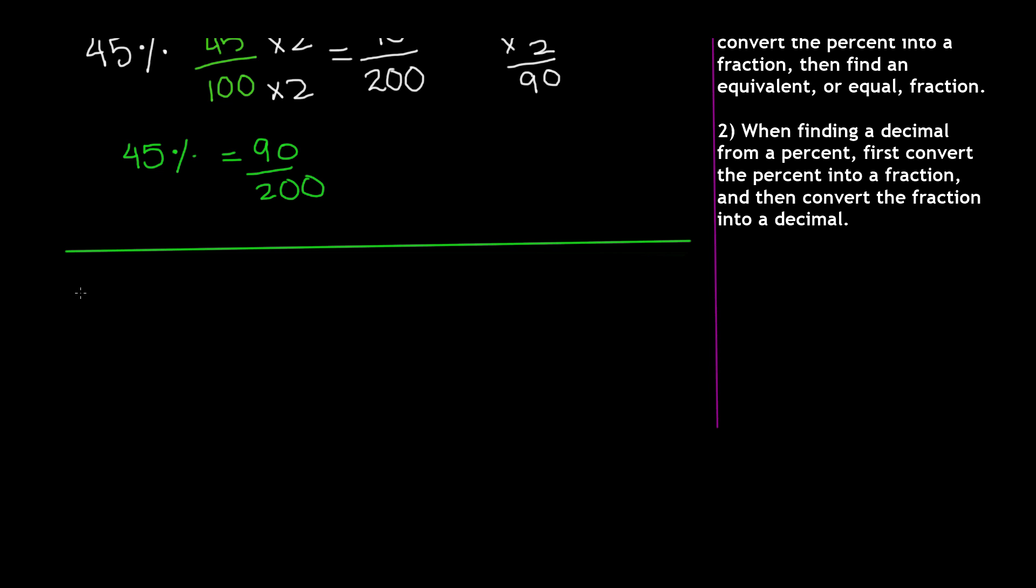So this time let's say we have 20%. The first step in this is to find the fraction. So convert this percent into a fraction. So remember percent means out of 100. So 20% is the same thing as 20 out of 100. So now we have our fraction.